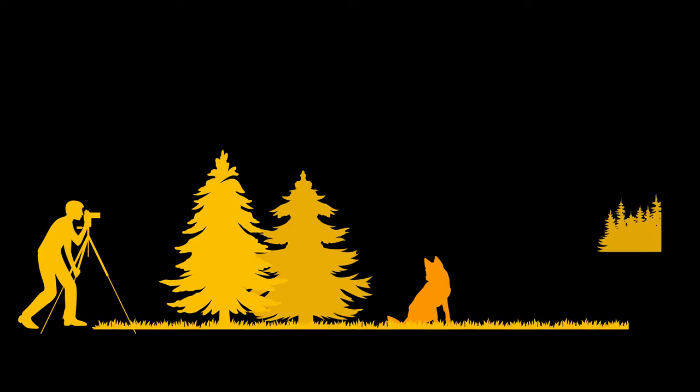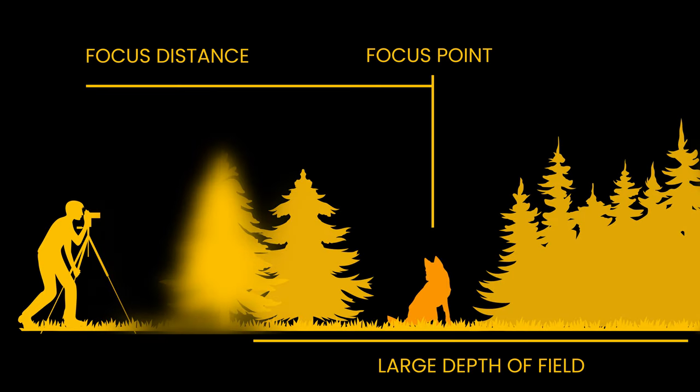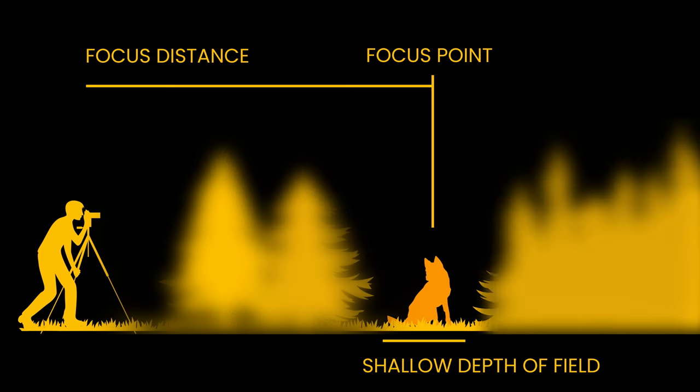The focal length of your lens also defines the depth of field in your image. While a wider focal length brings a larger depth of field, enabling you to get a wider range of elements in focus, a large focal length has a shallow depth of field, allowing it to focus on small objects even at a longer distance. This effect is the reason why lenses with a focal length of 70 millimeters or more are best for shooting portraits.